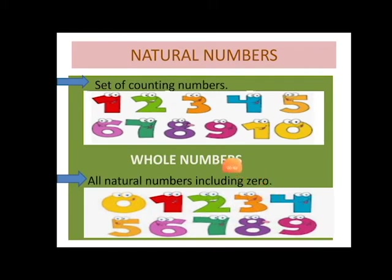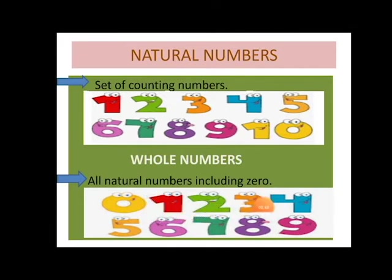In the same way, we know what are whole numbers. All natural numbers including zero form the whole numbers. So as you can see the numbers present on the screen, when you have included zero with all the counting numbers, that is zero with all natural numbers, we obtain whole numbers.